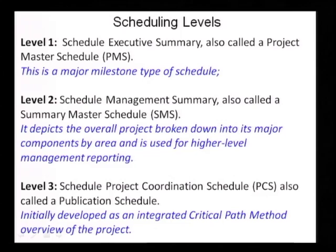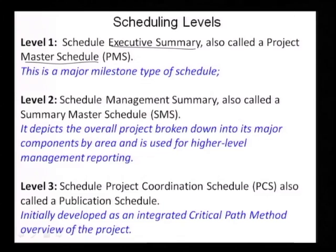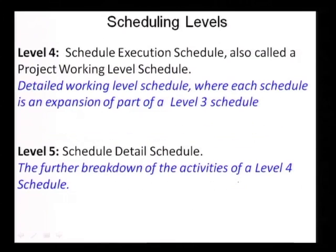When you look at the schedule, we will take this up from the next class as to how we go into the detail of scheduling. But it is very important to understand that scheduling can be done at different levels. You have what we call an executive summary or master schedule (level 1), a summary master schedule (level 2), a project coordination schedule (level 3), and when you go into level 4, you have the project working level schedule and a detail schedule (level 5).